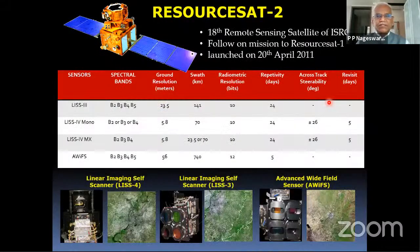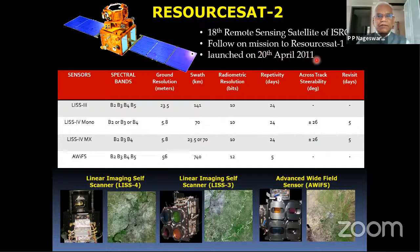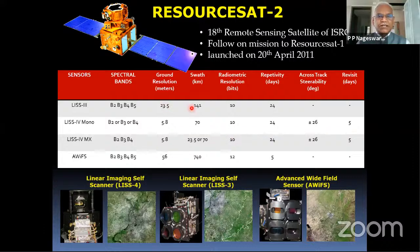Satellite remote sensing is one such remote sensing device. ResourceSat-2, launched in 2011, is a very important example with sensors including the Linear Imaging Self Scanning Sensor LISS-3, LISS-4, and the Advanced Wide Field Sensor. I will not go into the technical specifications of these sensors and satellites, but will emphasize how this data is used in the development of sericulture.